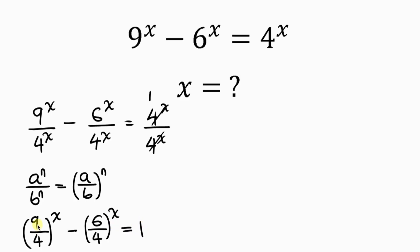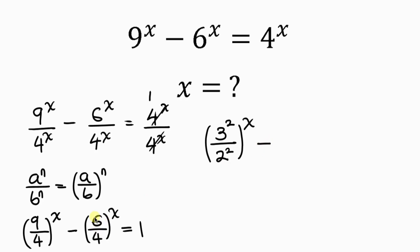Now notice that 9 is a perfect square, which can be written as 3 squared, all over 4, which is also a perfect square written as 2 squared, all raised to the x. And 6 over 4 simplifies: 6 divided by 2 is 3, 4 divided by 2 is 2, so we have 3 over 2, all raised to the x, equal to 1.